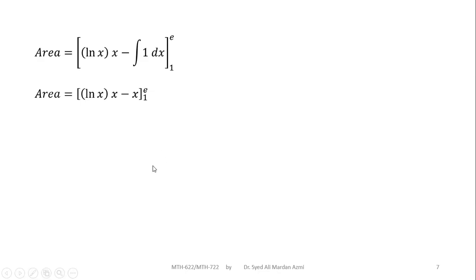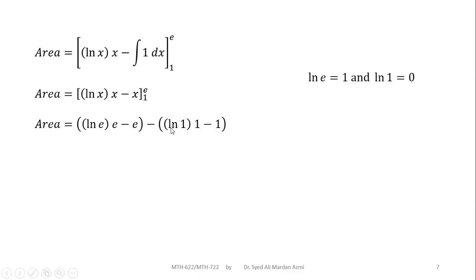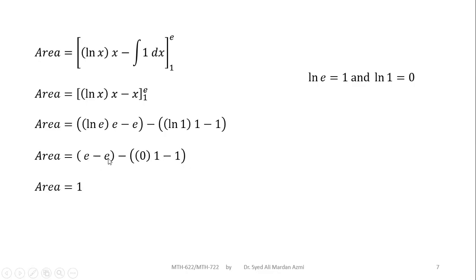Now we apply the limits: for the upper limit we replace x with e, and for the lower limit we replace x with 1. We get: natural log of e times e minus e, minus natural log of 1 times 1 minus 1. Since natural log of e equals 1 (natural log and exponential are reciprocals), and natural log of 1 equals 0, the first bracket gives e minus e and the second gives 0 minus 1. So e and e cancel out.